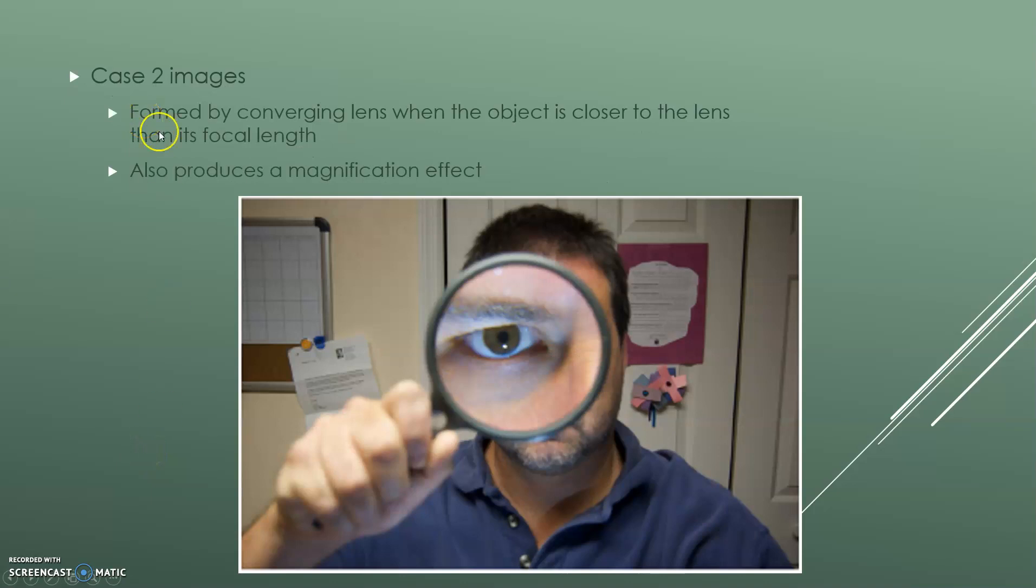So a case two image is formed by a converging lens when the object is closer to the lens than its focal length. So this is like the same thing here. He's got a lens, a convex lens, and he's holding it up and he's actually closer than its focal length. If we were to actually flip this picture sideways and look at him from the sideways view, you would be able to see that the focal length, he's closer to the lens than its focal length. And this produces a magnification effect and is also considered a virtual image.